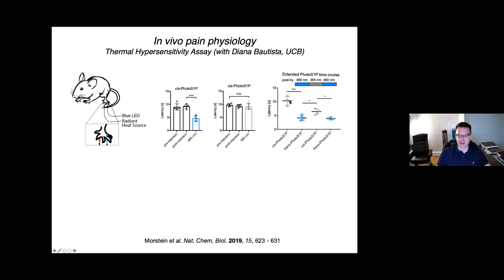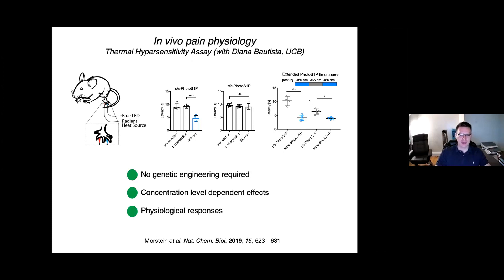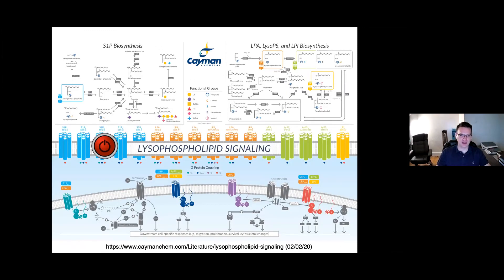We were also able to partially reverse this effect. In an extended time course, we first activate the effect and then inactivate it using UVA light. We don't see complete inactivation, which we believe is due to the poorer penetration depth of UVA light. Comparing this to some of the optogenetic approaches available to control aspects of the peripheral nervous system, we don't need any genetic engineering, and importantly the responses we observe are entirely physiological — all receptors modulated are endogenously expressed, with no engineered components.